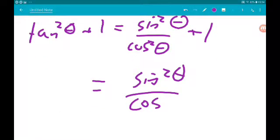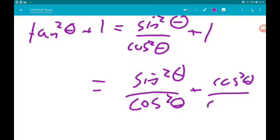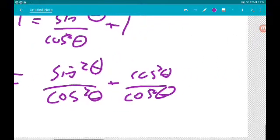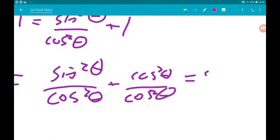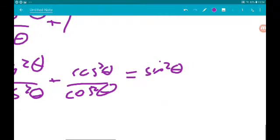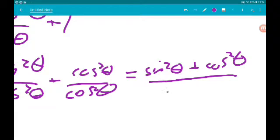We can say that 1 is cos squared over cos squared. So sin squared over cos squared plus cos squared over cos squared. Now that gives us sin squared plus cos squared over cos squared.